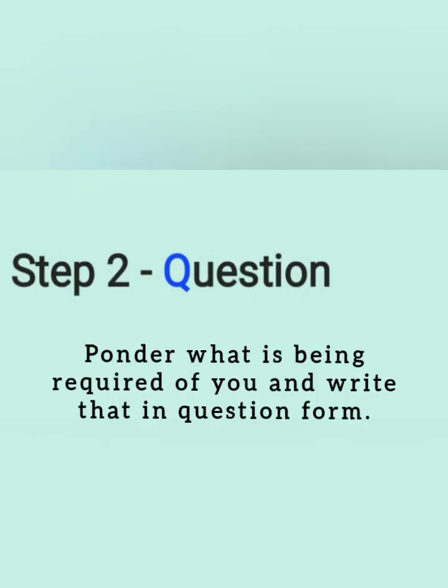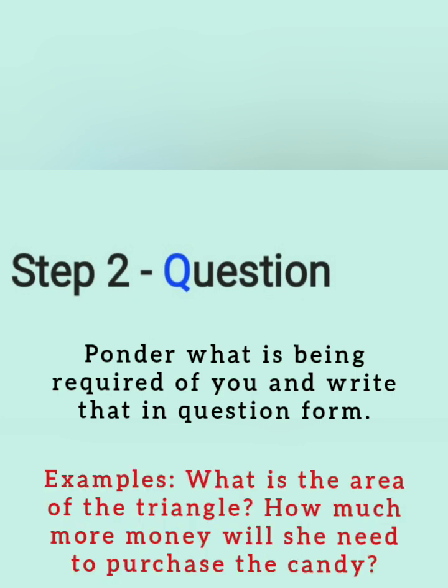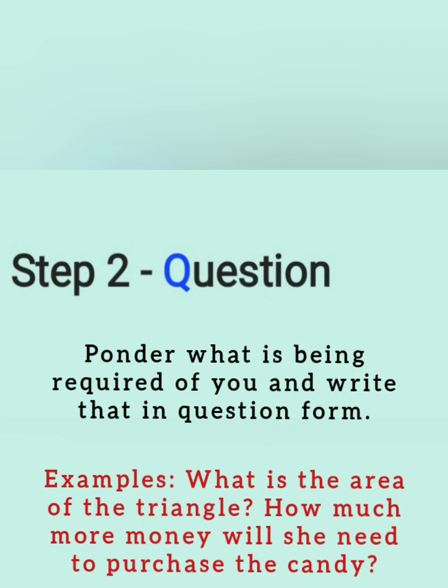Step two, question. As the name suggests there are a number of spots where we will do questioning. But the first question we're asking ourselves is what is required of us? So ponder what is being required of you and write that in question form. Example, what is the area of the triangle? How much more money will she need to purchase the candy?